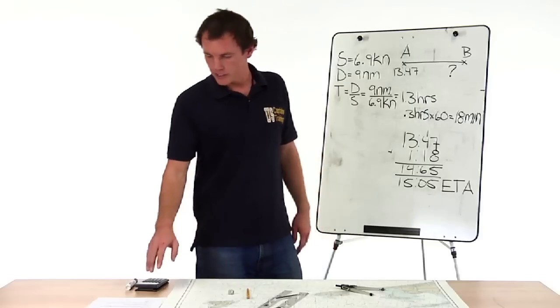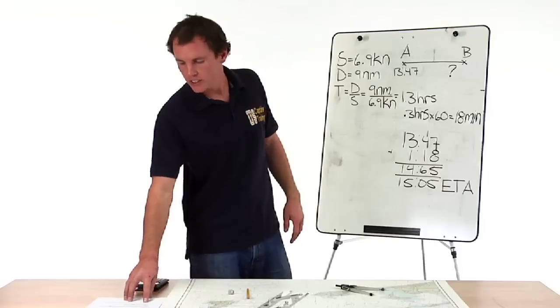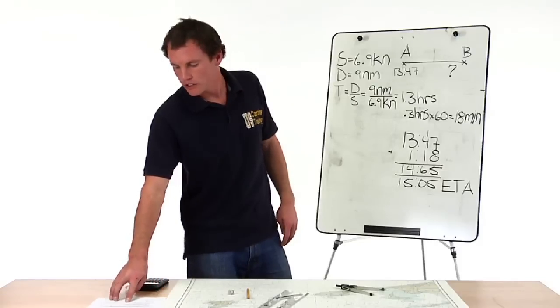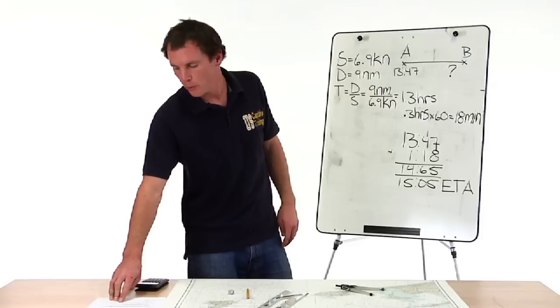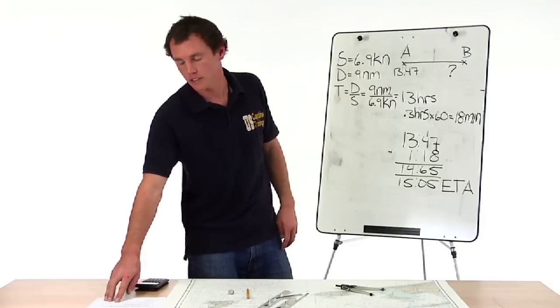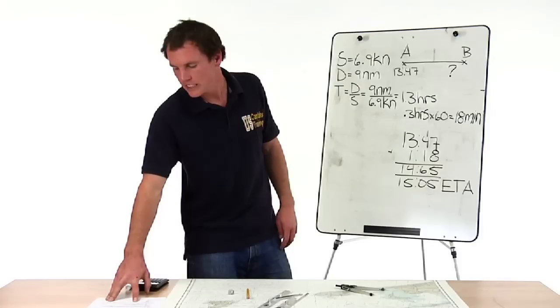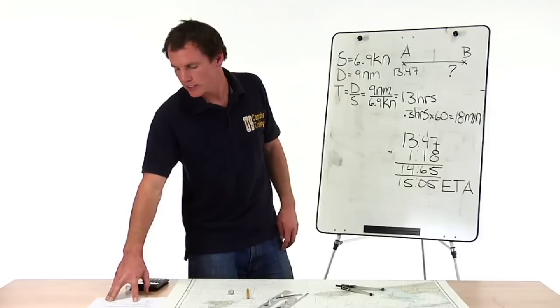The problem reads: your position is latitude 41 15.2 north, longitude 71 50.1 at 1347. You're turning 6.9 knots. What is your ETA at Shaguang Reef Buoy 7SR?